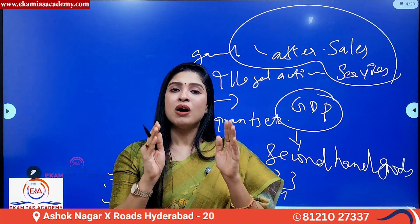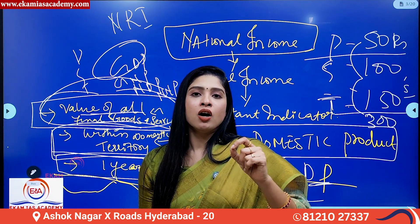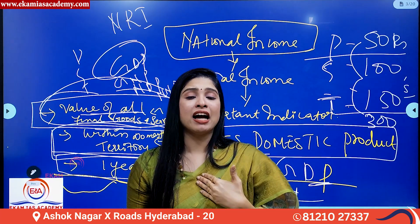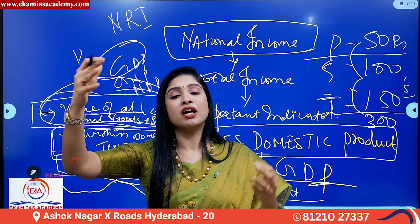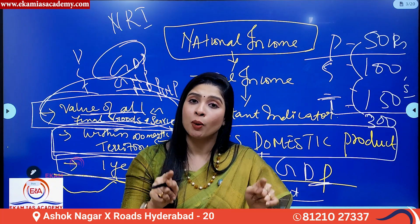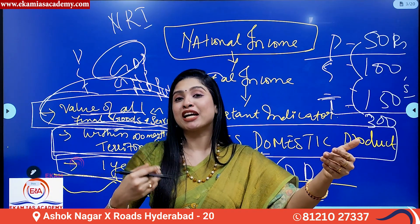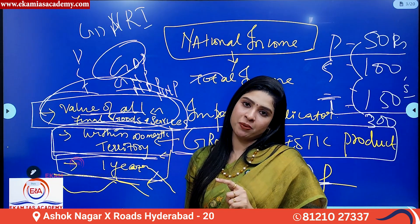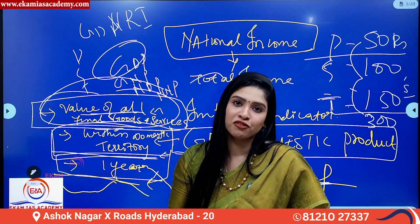There are some exceptions. Though the definition says within domestic territory, Indian embassies abroad and shipping operations by Indian companies in foreign countries are included in the calculation of India's GDP. Even though they are not within the domestic territory, they are contributing to India's economic production process. This is a very important point for the prelims examination — knowing which items are included and which are excluded is a simple but tricky question.